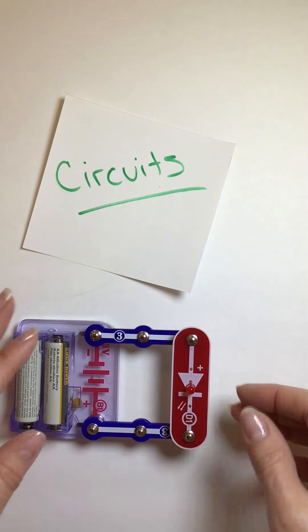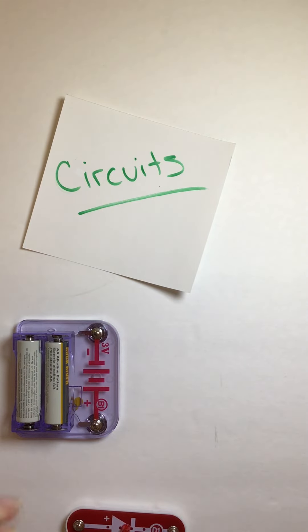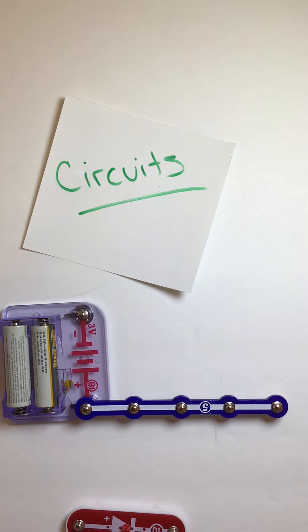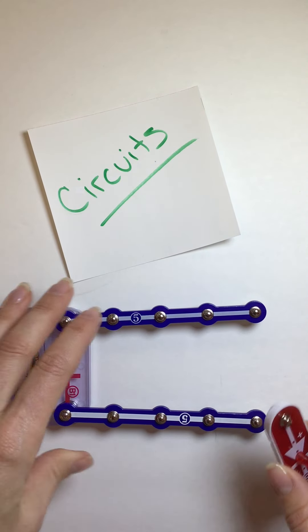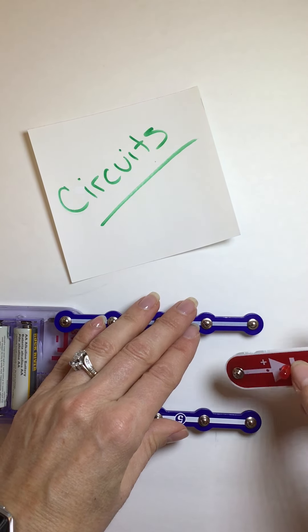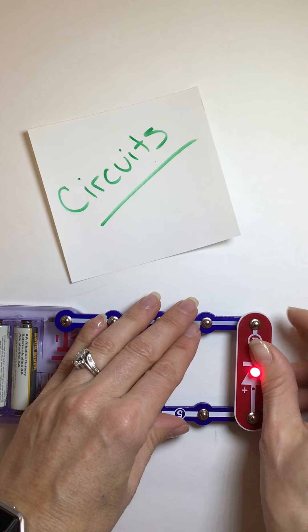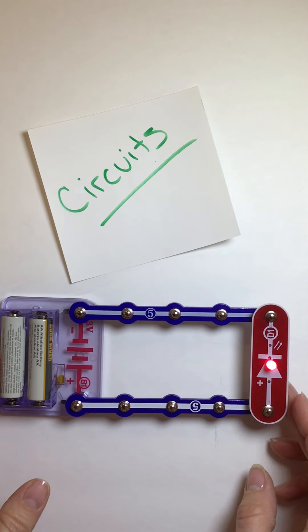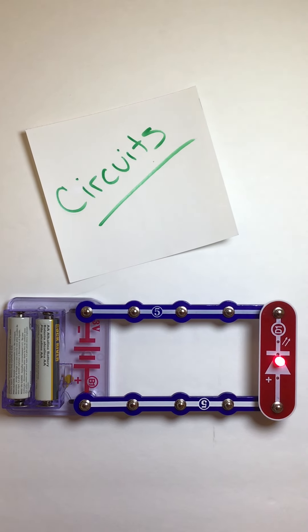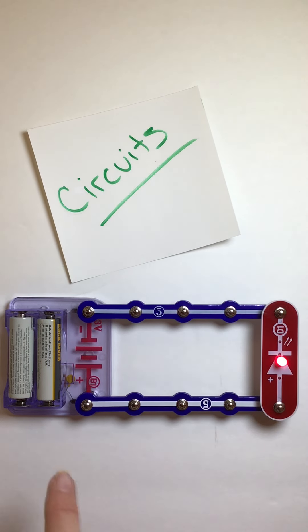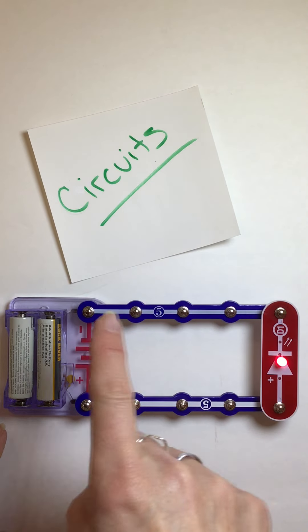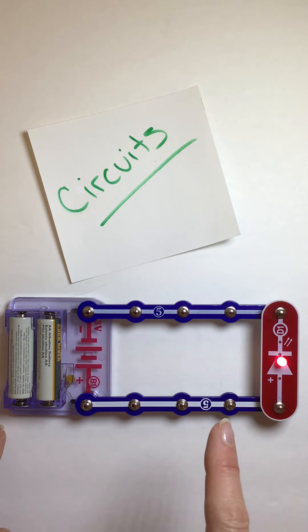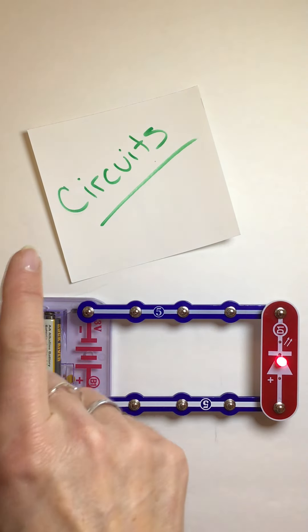So now let's look at it in another way. I still have a power source. And I still have a path. And I still have a load. This is called a series circuit. It goes in a series because it just goes from one thing to the next thing. It goes from the battery to the path, to the load, to the path, to the battery.